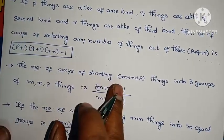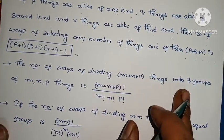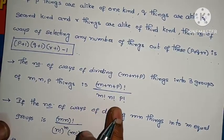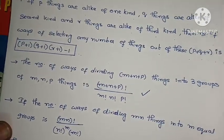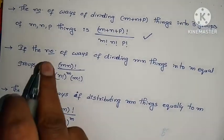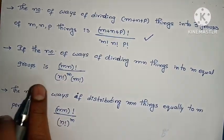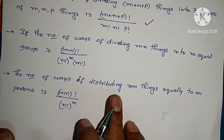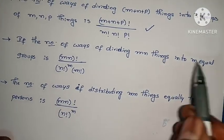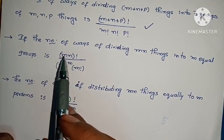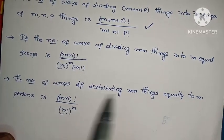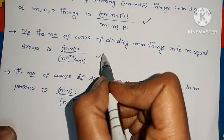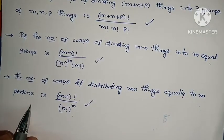The number of ways of dividing (m+n+p) things into three groups of m, n, and p things is (m+n+p) factorial divided by m factorial into n factorial into p factorial. The number of ways of dividing mn things into m equal groups is mn factorial divided by (n factorial)^m into m factorial. The number of ways of distributing mn things equally to m persons is mn factorial divided by (n factorial)^m.